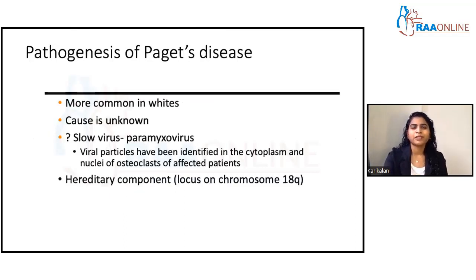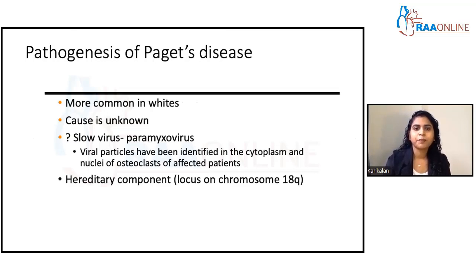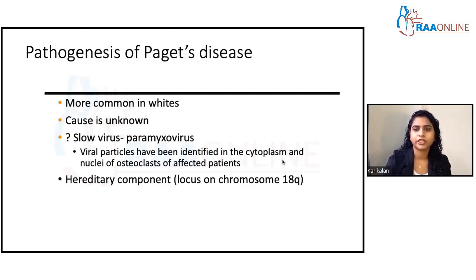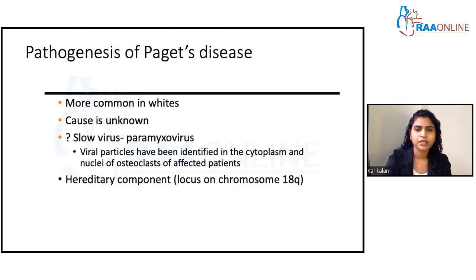The pathogenesis of Paget's disease is not fully known. One proposed etiology is paramyxovirus — viral particles have been identified in the osteoclasts of affected patients, but this is not completely proved. There is also a hereditary component — a change in the locus on chromosome 18q makes an individual more prone to developing Paget's disease.